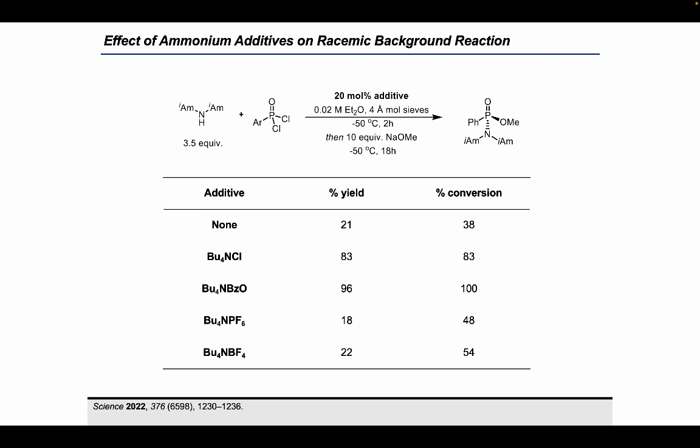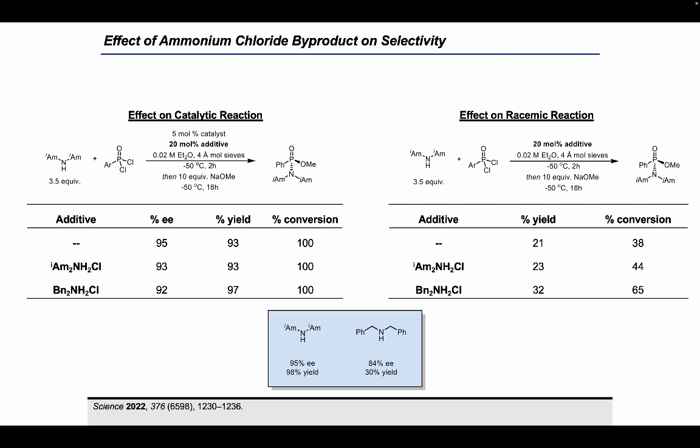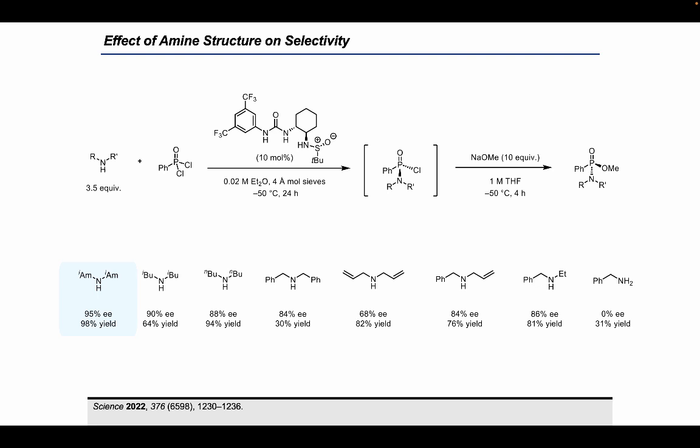We examined tetrabutylammonium salts with different counterions and found that tetrabutylammonium benzoate also induced rate acceleration, while tetrabutylammonium salts with non-basic, non-nucleophilic anions such as PF₆⁻ and BF₄⁻ did not catalyze the reaction. We then examined dialkyl ammonium chlorides: diisoamyl ammonium chloride and dibenzyl ammonium chloride had different effects on the racemic background reaction, with dibenzyl ammonium chloride inducing rate acceleration while diisoamyl ammonium chloride did not. These results help explain why lower enantioselectivity with dibenzylamine reflects not just lower intrinsic catalytic selectivity, but also a racemic background reaction catalyzed by the corresponding ammonium chloride byproduct.